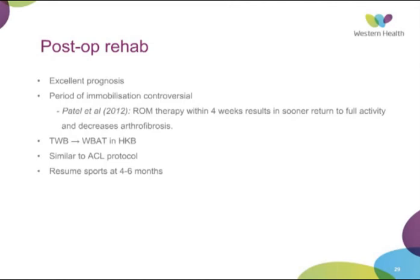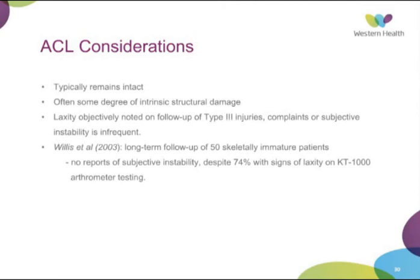Briefly, ACL considerations: typically in these injuries the ACL remains intact. About 14% have an ACL injury. There is often some degree of intrinsic structural damage and attenuation of the ACL fibres at the time of injury. Objectively noted laxity on follow-up of type 3 injuries occurs in a significant proportion, though subjective instability is infrequently noted — most patients don't notice it and are asymptomatic. Willis in 2003 did a long-term follow-up of 60 skeletally immature patients and reported no subjective instability despite 74% having signs of laxity on arthrometer testing.